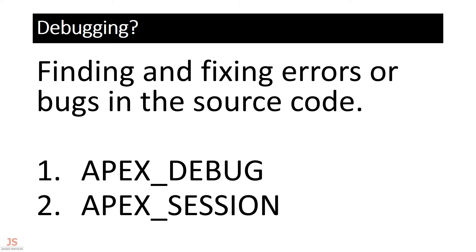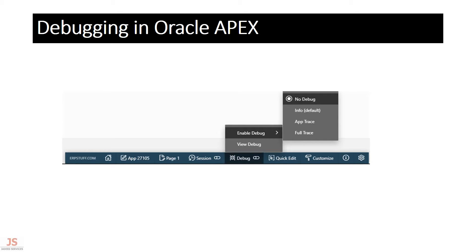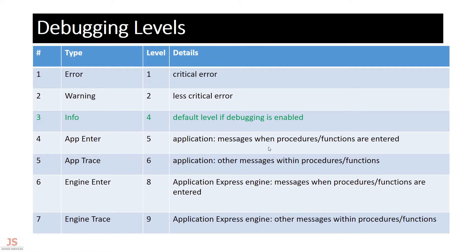It's quite straightforward. When you open an application as a developer or run it, at the bottom you will see debug options. When you want to do debugging from the front end, you enable it. There are different levels — by default it is closed. This is info level, this is app trace, this is full trace. After debugging, you disable it and view the debug log.